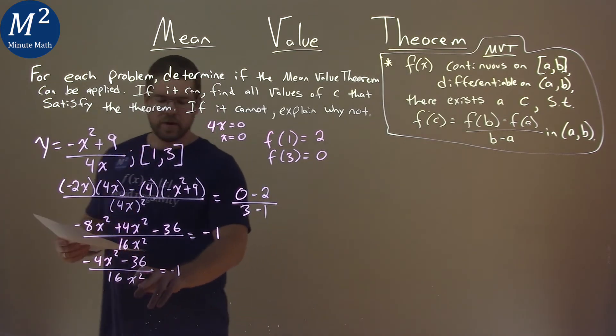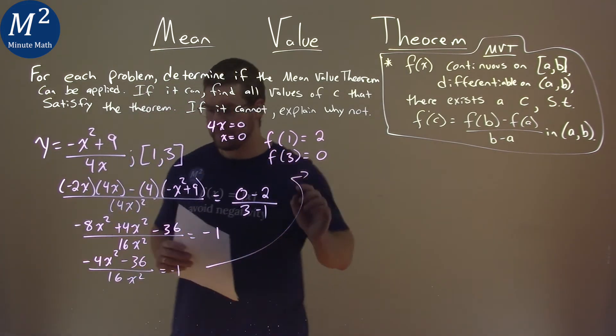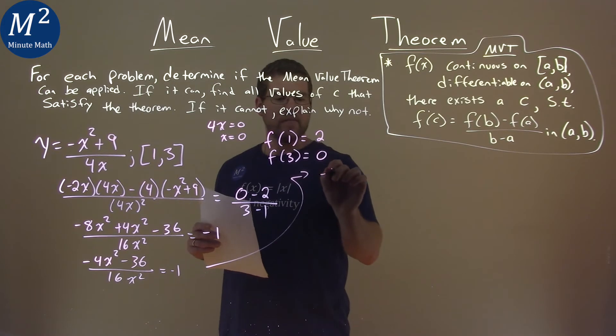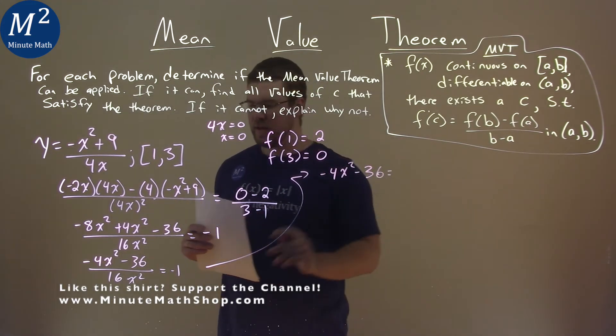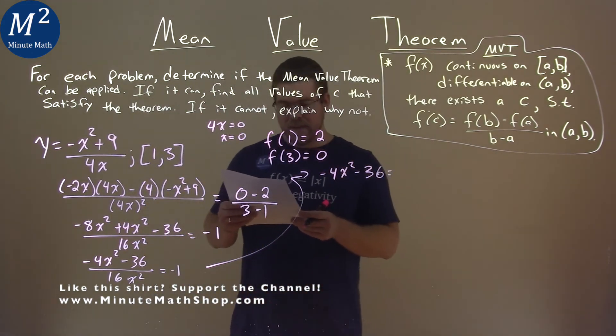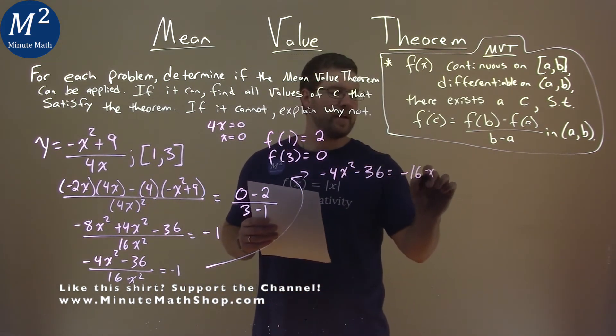From there, I'm going to multiply both sides by 16x squared. And we have negative 4x squared minus 36 is equal to negative times 16x squared, which is negative 16x squared.